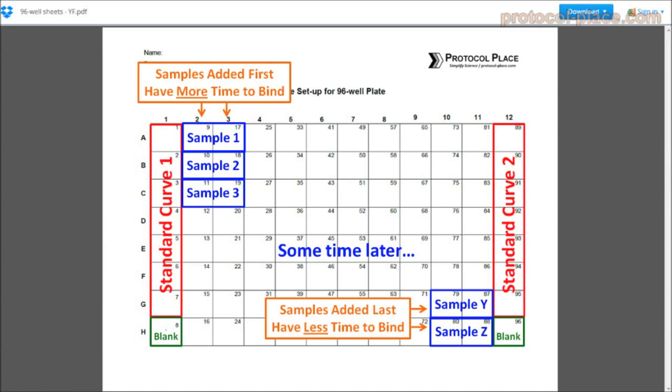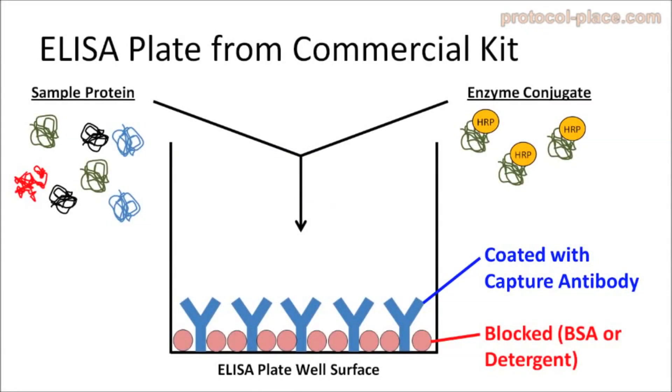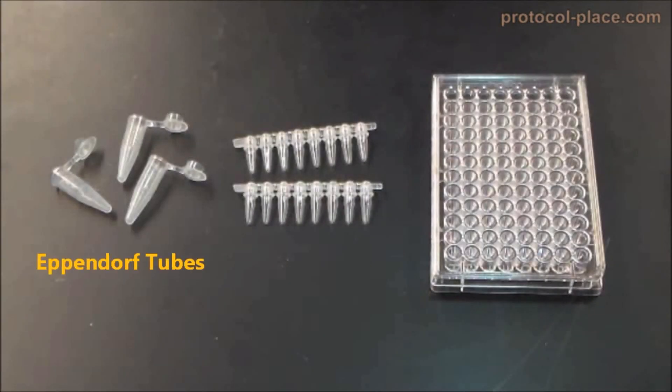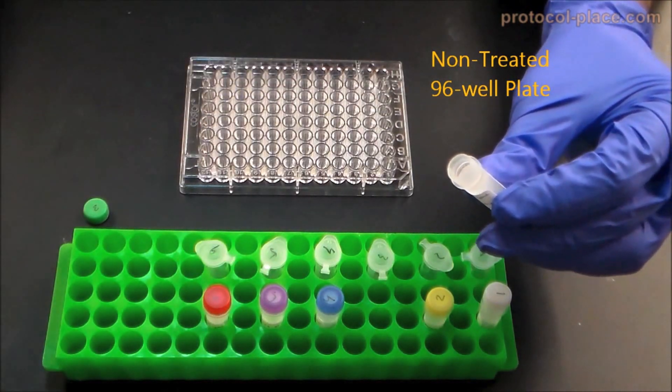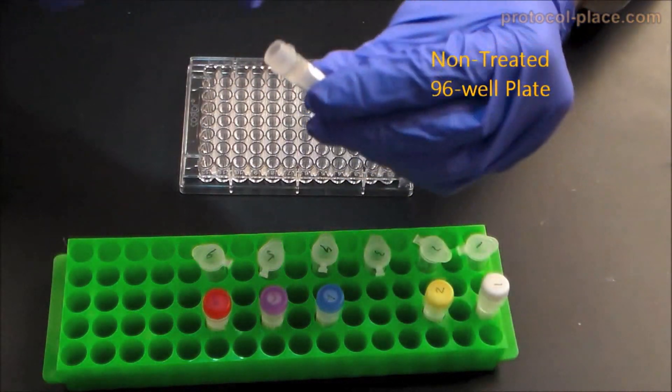Fortunately, there is an easy way to eliminate the potential risk of skewing measurements due to time delay between samples. The solution is to simply pre-mix all of the samples and standards with enzyme conjugate prior to adding them to the ELISA plate. This can be done in Eppendorf tubes or strip tubes if only a small number of samples are required, or it can be performed in a non-treated 96-well plate, which is probably the best if you have to handle several samples at once.